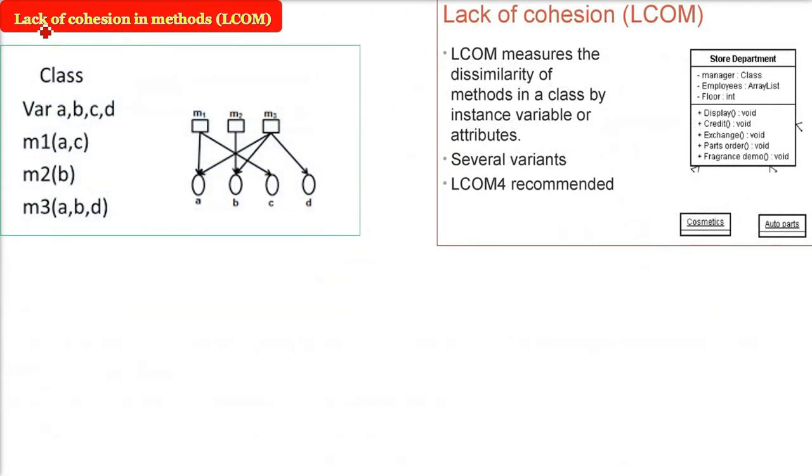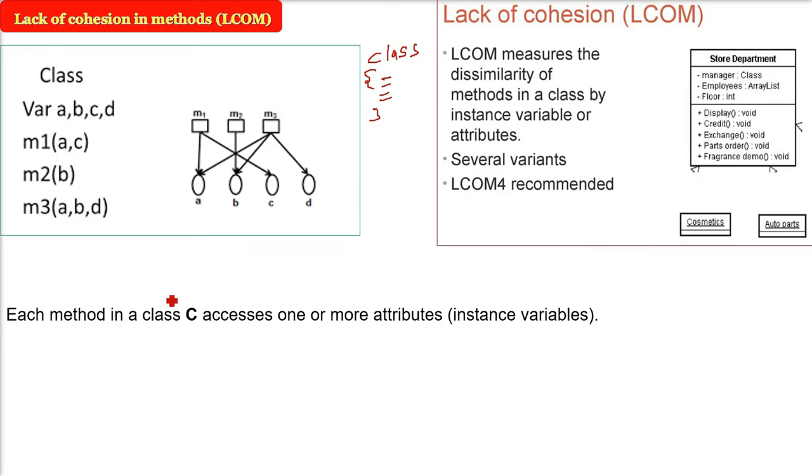Lack of cohesion in methods, LCOM. Now LCOM measures the dissimilarity of methods in a class by instance variables or attributes. There are different variants. Let me take an example of class. Now we want that cohesion should be there inside a class. Now each method in a class is bound to access one or more attributes. These are called instance variables.